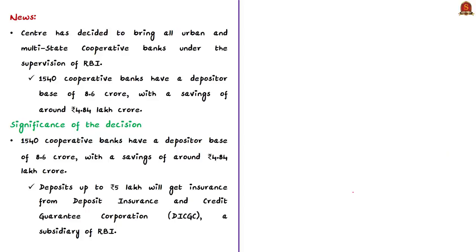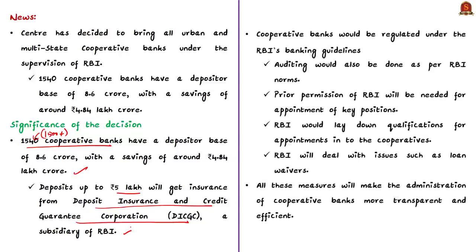Let us discuss the significance of the decision made by the Central Government. The 1,500 cooperative banks have a depositor base of 8.6 crore and savings of around 4.84 lakh crores. When the ordinance comes into effect, deposits up to 5 lakh rupees will get insurance from the Deposit Insurance and Credit Guarantee Corporation, which is a subsidiary of the Reserve Bank of India. These cooperative banks would also be regulated under RBI's banking guidelines and their auditing would be done as per RBI norms. The permission of RBI will be required for the appointment of key positions in these banks, and RBI will also deal with issues such as loan waivers. With all these measures, the cooperative banks will effectively come under RBI's purview.